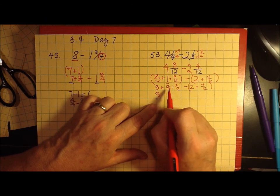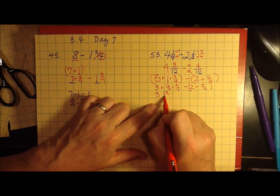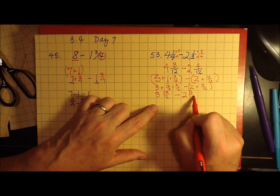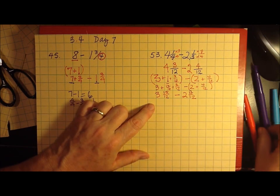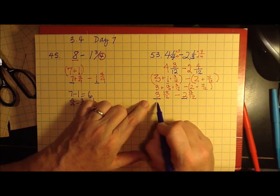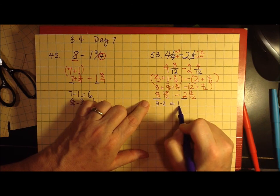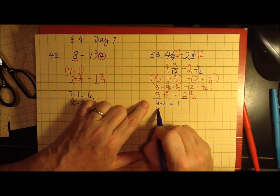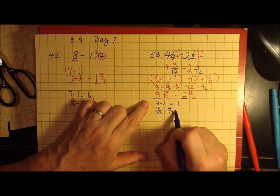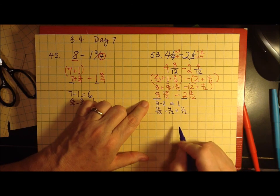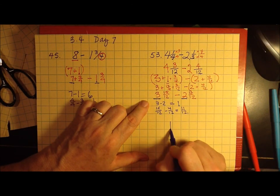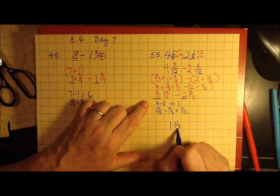So let's see what this turned into. Now it's 3 and fifteen-twelfths minus 2 and four-twelfths. So let's work with our whole numbers first. 3 and 2, 3 minus 2 equals 1, fifteen-twelfths minus four-twelfths equals eleven-twelfths. So the answer to this is 1 and eleven-twelfths.